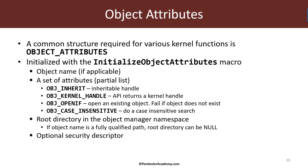The last general thing to know when working with kernel APIs is a data structure called object attributes. Object attributes is used with many kernel APIs, so we need to know how to work with it. The structure is documented, so you can initialize its fields directly. However, there's a macro called InitializeObjectAttributes which we typically use, and through it we provide the various parameters stored within this data structure.